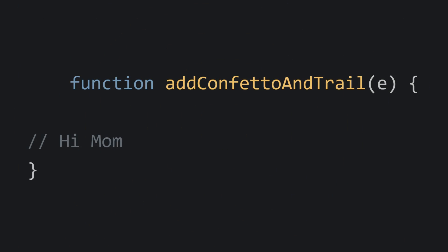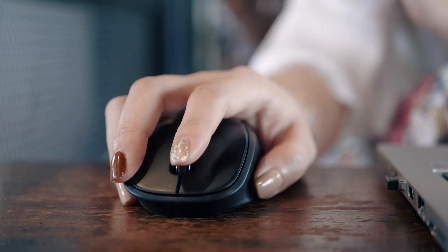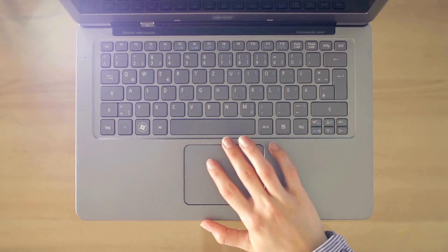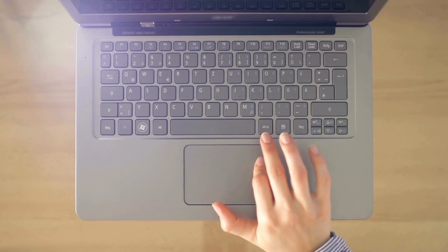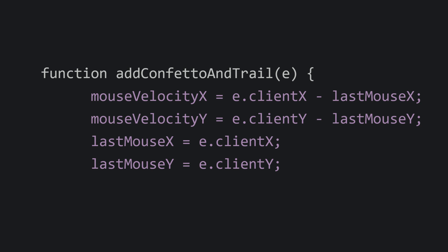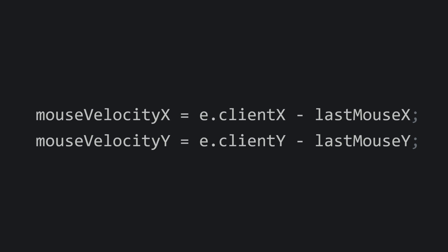Let's now add the addConfettoAndTrail function. It is triggered every time the mouse moves across the canvas, but what does it actually do? We are keeping track of the mouse's last position with lastMouseX and lastMouseY to calculate the mouse velocity. We want our confetto to react to how fast or slow you are moving the cursor — it's all about making the animation feel connected to your actions. The event listener calls addConfettoAndTrail passing the event object, which contains the current position: e.clientX for horizontal X and e.clientY for vertical Y. We calculate the mouse velocity by subtracting the last recorded position from the current one, giving us mouseVelocityX and mouseVelocityY. These values tell us how fast and in which direction the mouse is actually moving.